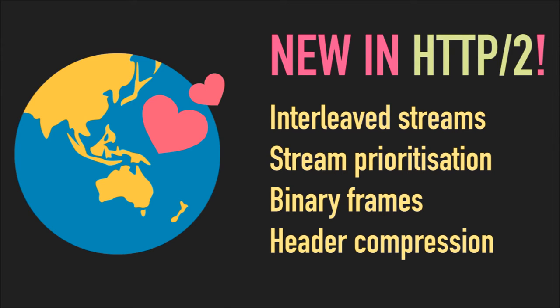HTTP2 solves a lot of these things. Now you have interleaved streams rather than multiple sockets. One socket at the TCP level — you can send lots of requests and responses as streams. It basically chops requests and responses into little frames and sends them over the same socket. You can have 100 requests going at the same time and 100 responses coming back, all interleaved. That 100 is actually the default minimum built into the spec — kind of unheard of in HTTP1, but in HTTP2 it's the minimum.